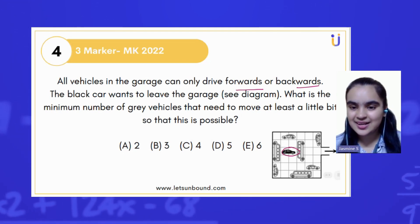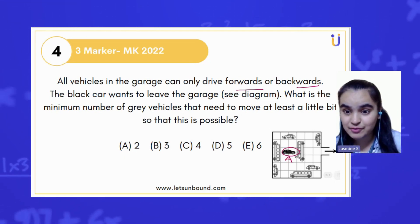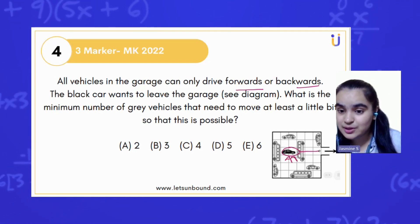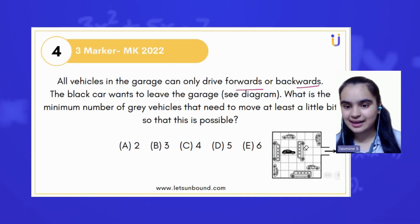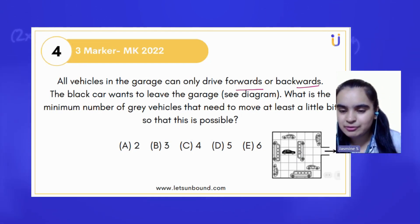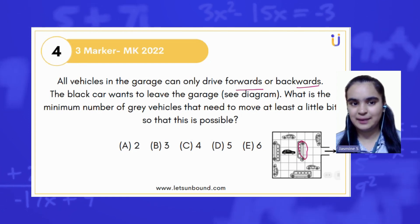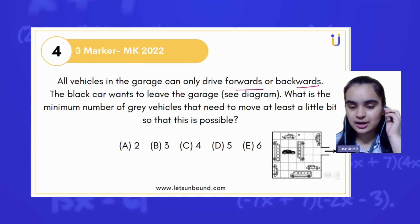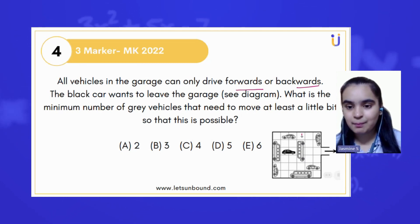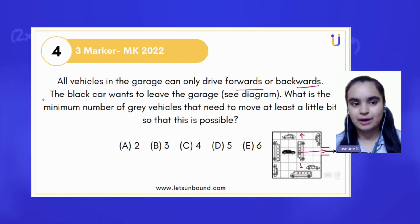Okay, so here is a figure with us. Here is the black car which we have to move. It will go straight to go out of this garage. For that, if you will look carefully, only this is the car which is troubling the black car, right? So if we can move this big car, maybe up or down, this black car can go outside.